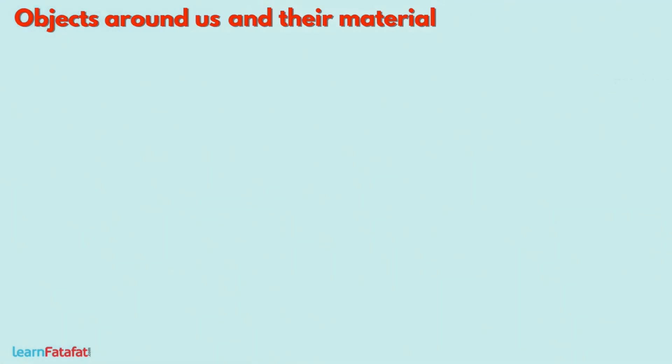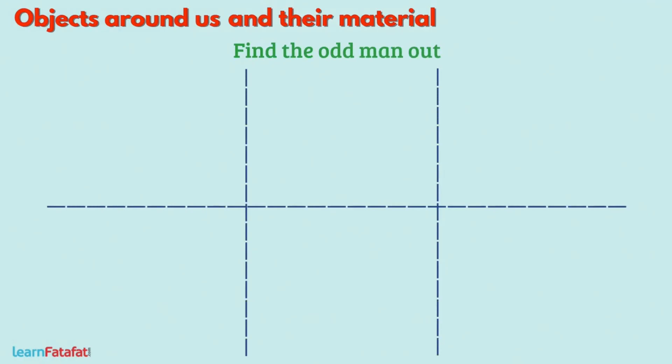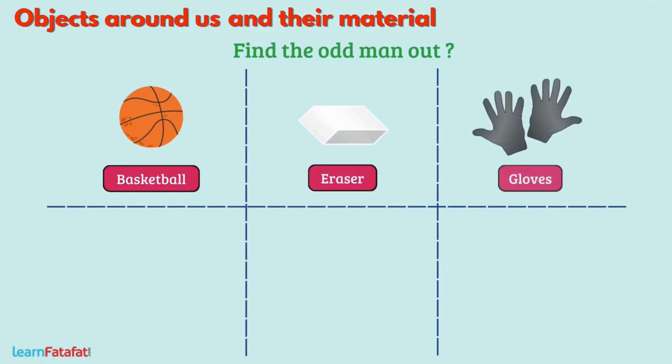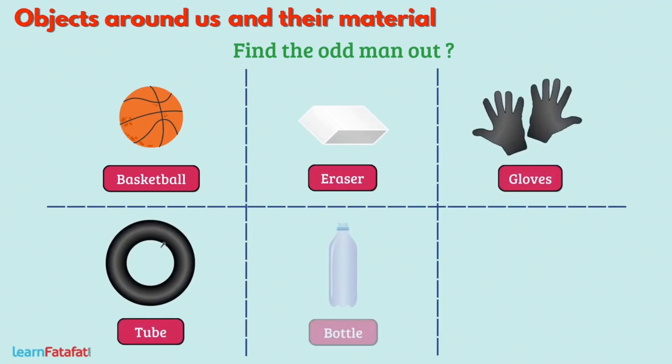To test your knowledge, here is a question. Find the odd man out from the given example: basketball, eraser, gloves, tube, bottle, balloon.